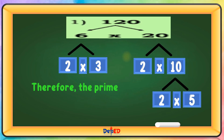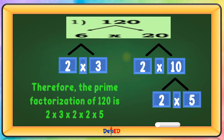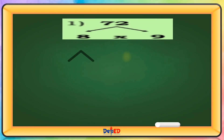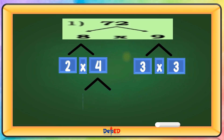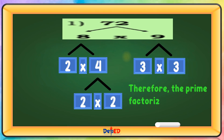Therefore, the prime factorization of 120 is 2 times 2 times 2 times 3 times 5. Therefore, the prime factorization of 72 is 2 times 2 times 2 times 3 times 3.